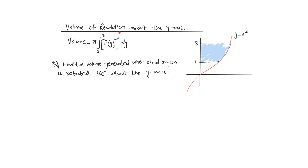Now let's look at the volume of revolution about the y-axis. When a curve is rotated 360 degrees about the y-axis, a solid is formed. To find the volume, express x as a function of y, square it, integrate with respect to y from the lower to upper y-value limits, and multiply by π.